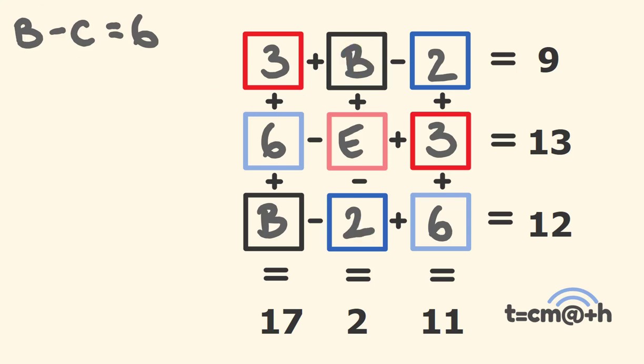We can now work out B. So let's work that out. What number subtract 2 plus 6 equals 12? That's going to be 8. 8 take away 2 is 6, plus 6 is 12. That means that this value here is also 8. 3 plus 8 is 11, subtract 2 is equal to 9.